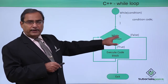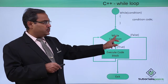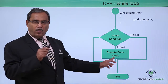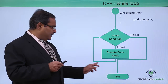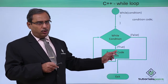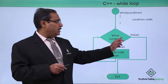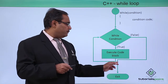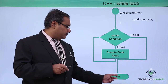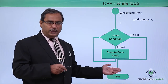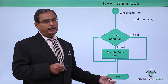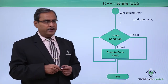At first the control will come and check the condition. If the condition is true, this corresponding block will execute once, then the condition will be checked again. If the condition is true again, the block will be executed. If the condition is false, control comes out from this condition block and subsequent sections of the program get executed.